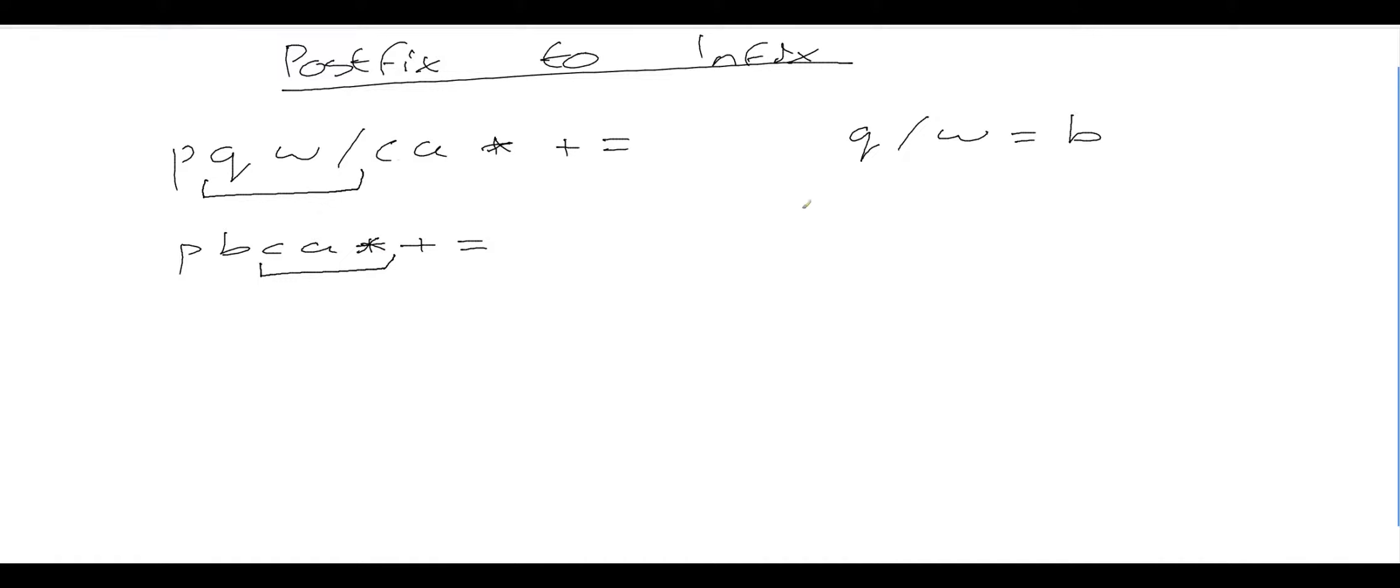And that's here. So I'm going to put a little aside and say c star a is the same as saying, let's pick a letter that I haven't got in there, d. Then I can reduce this to p, b, d plus equals.